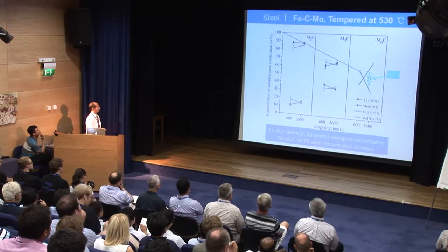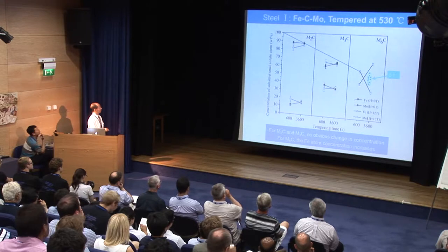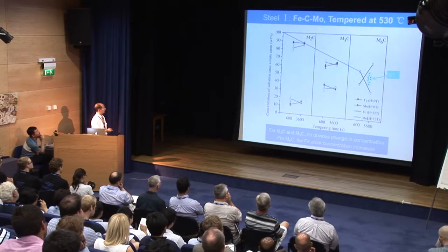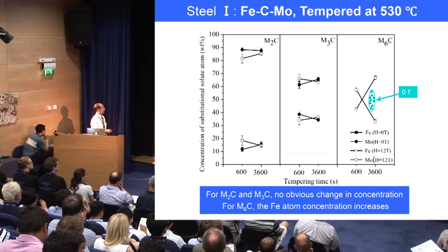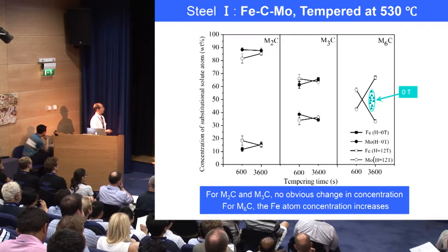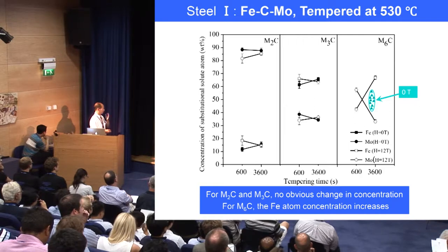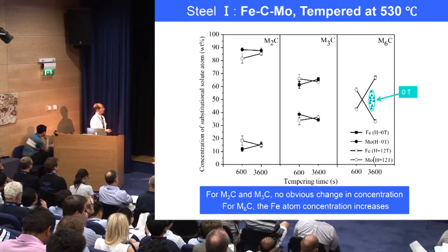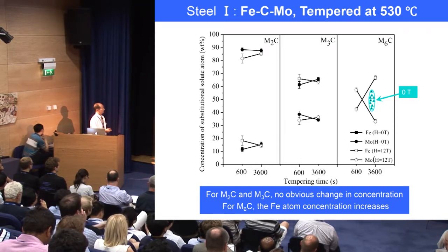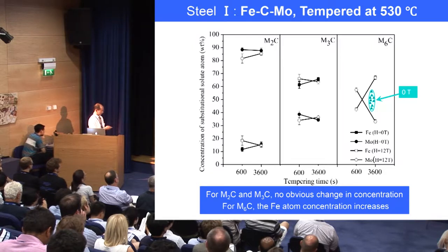Regarding the concentration, we can see that for M2C and M3C, we did not see any obvious change for these two kinds of carbides. But for M6C alloy carbides, the iron concentration is remarkably increased in the presence of high magnetic field.